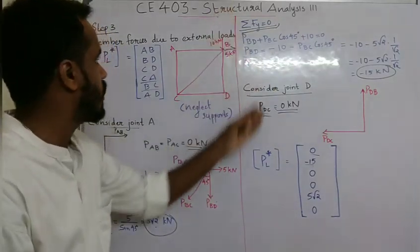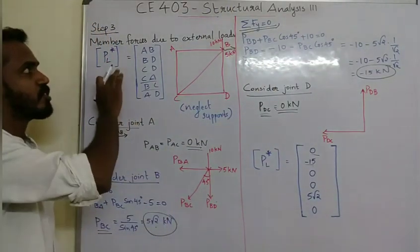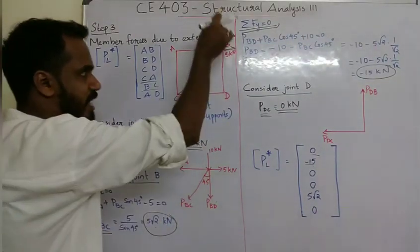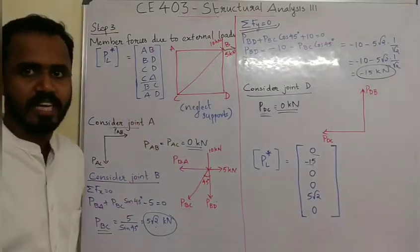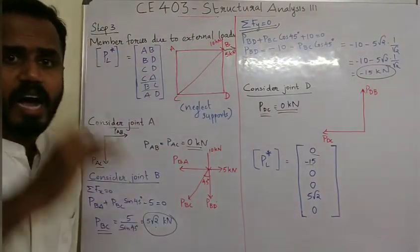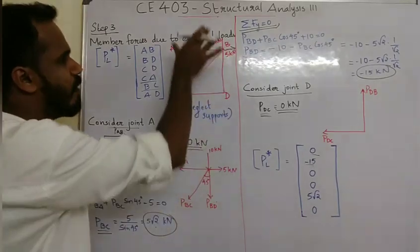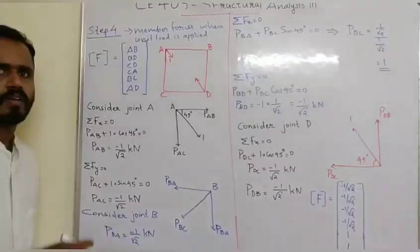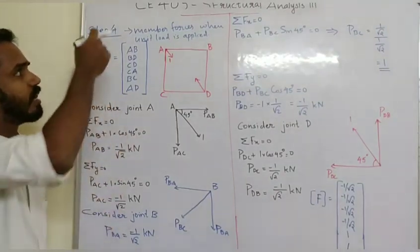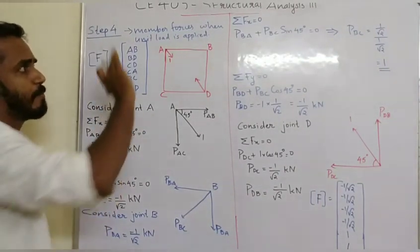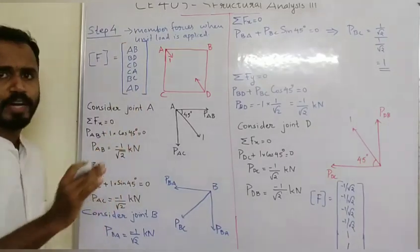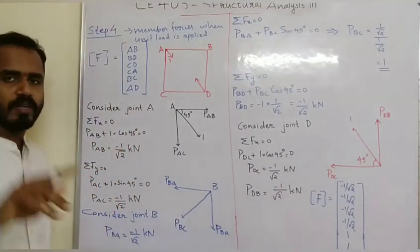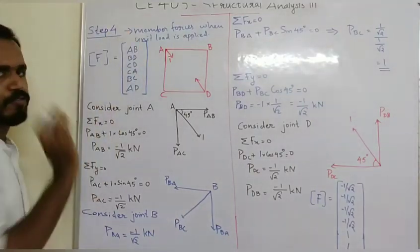So this is step 3: member forces due to external load — OI external load. Now we calculate step 4. In step 4, we need the force transformation matrix. We calculate the member forces when a redundant unit load is applied. We apply a unit load and calculate the member forces.